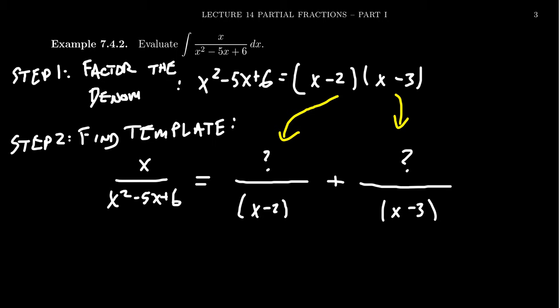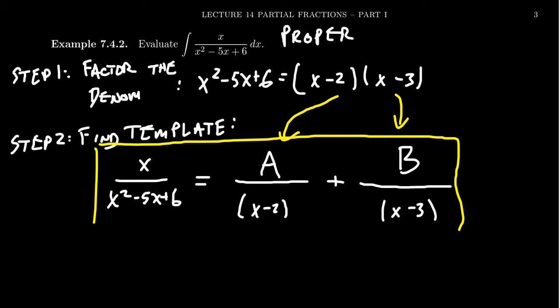Since this fraction is a proper fraction, we can assume it's a sum of two proper fractions. If the first denominator is x minus 2, and the fraction is proper, the numerator must have degree less than 1 — so it's a degree 0 polynomial, which is a constant. We'll call it capital A. Similarly, the second numerator is some constant we'll call B. So our template is: x over x squared minus 5x plus 6 equals A over x minus 2 plus B over x minus 3, where A and B are real numbers.